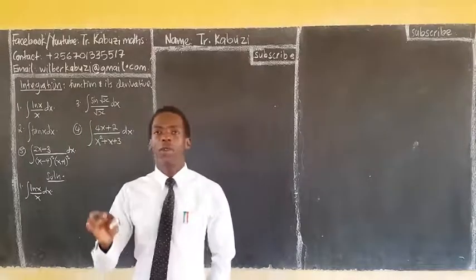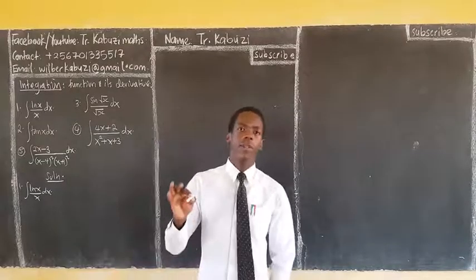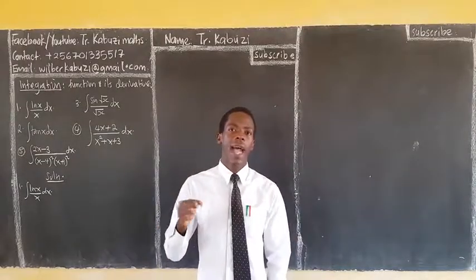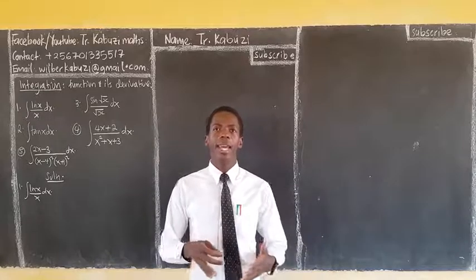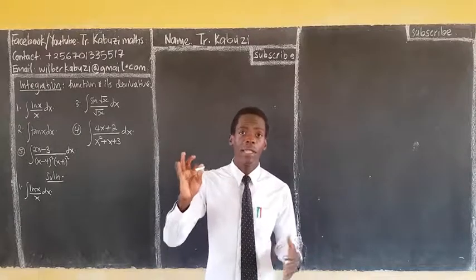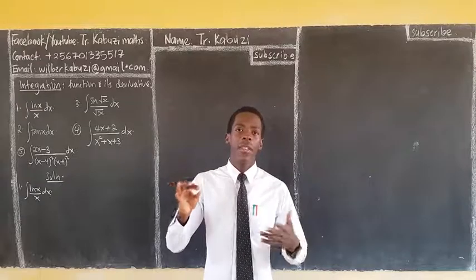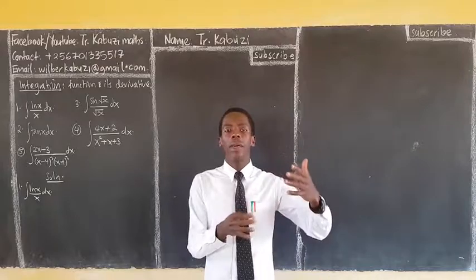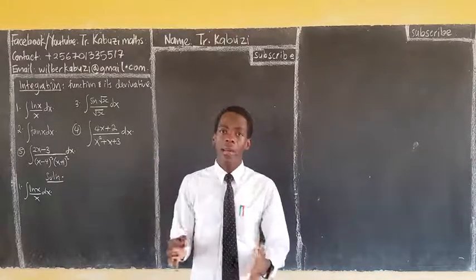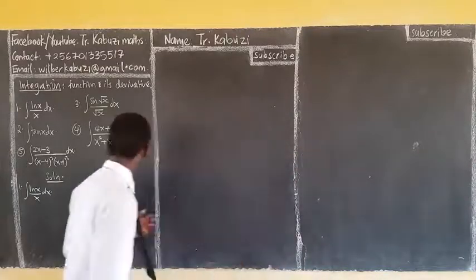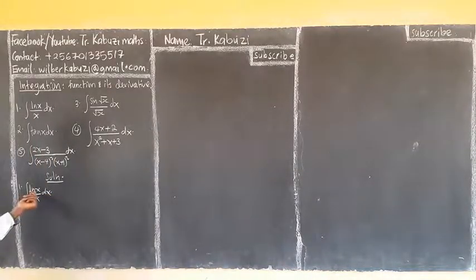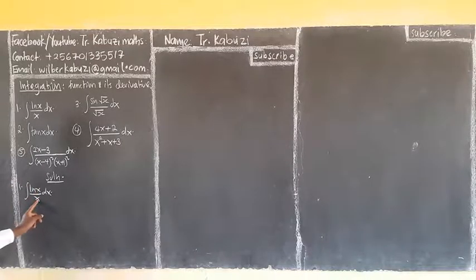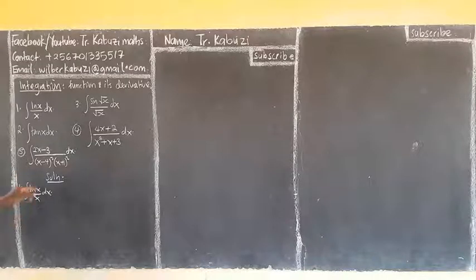Now let us see how we handle these integrals when functions are in the denominator. We start by recognizing that we can always use a table whether the function is in the denominator or the numerator. We know we can differentiate ln(x) and get 1 over x, and 1 over x is already there, so we can differentiate this and get 1 over x.